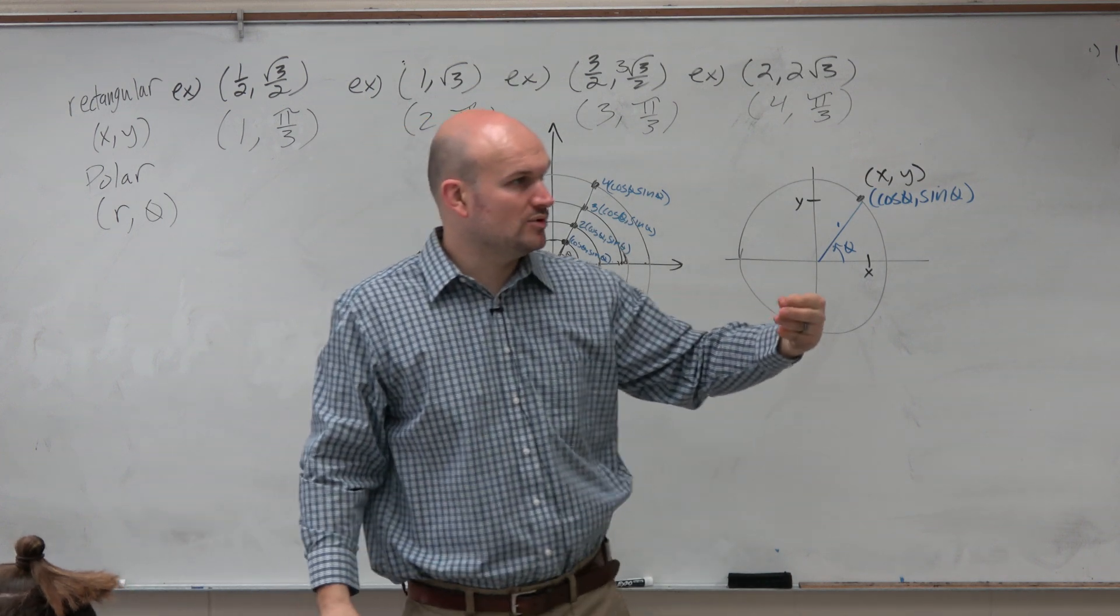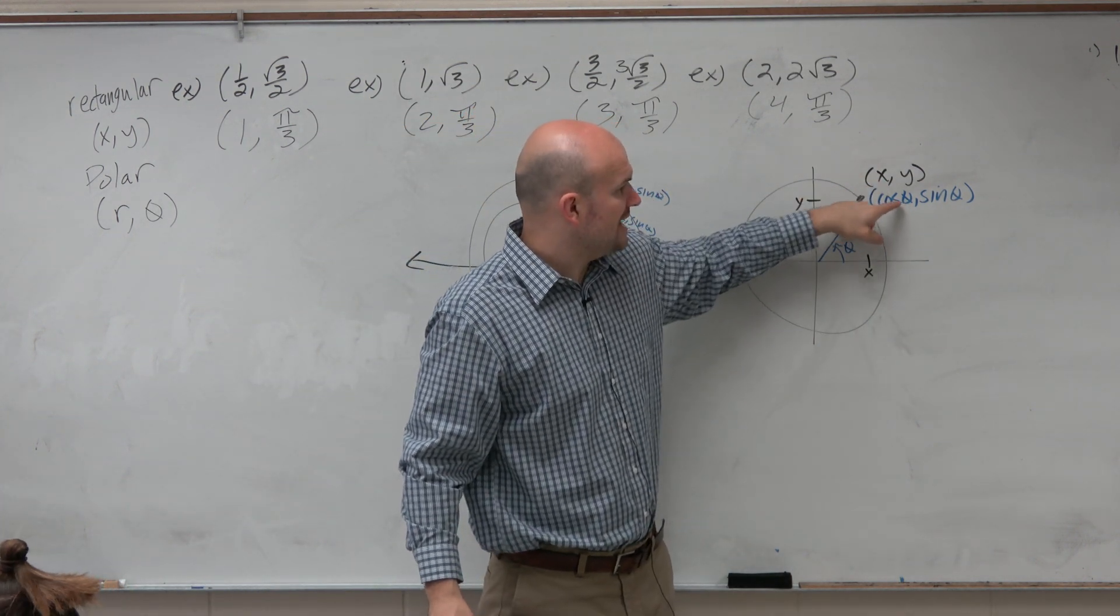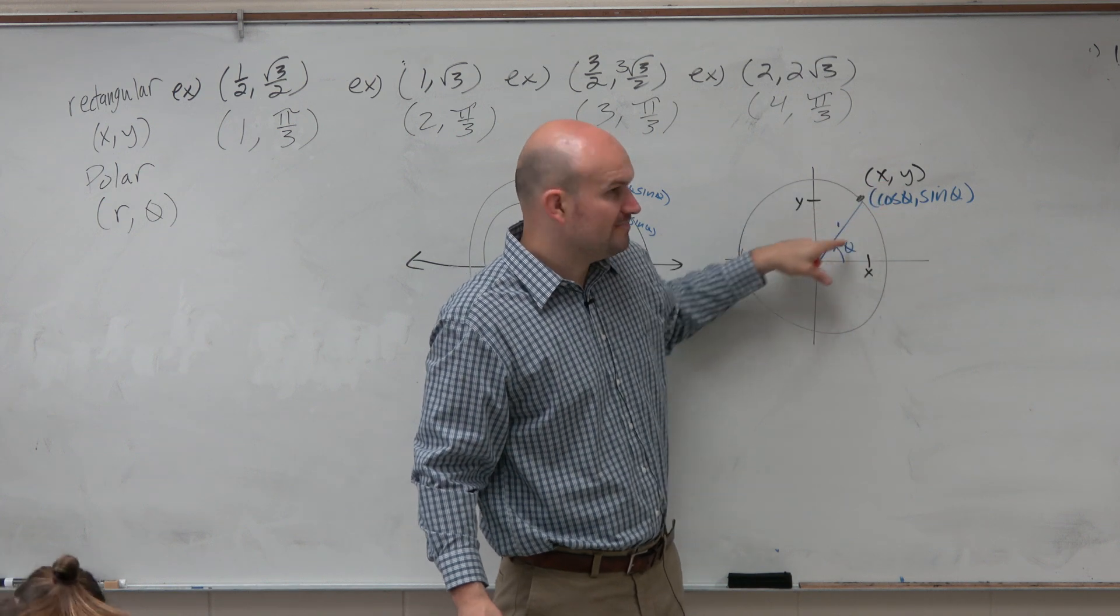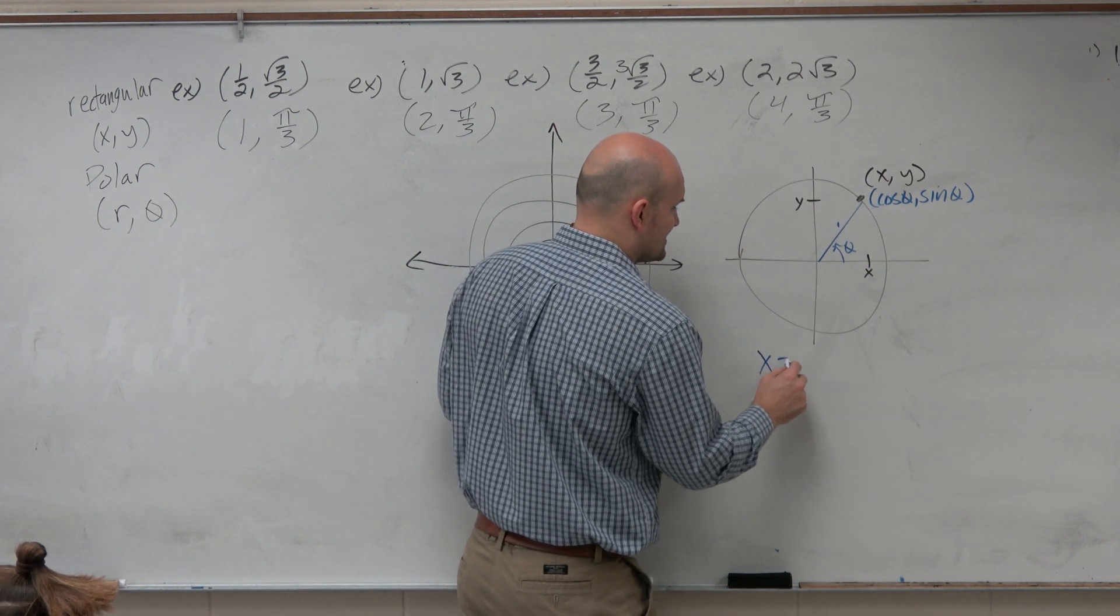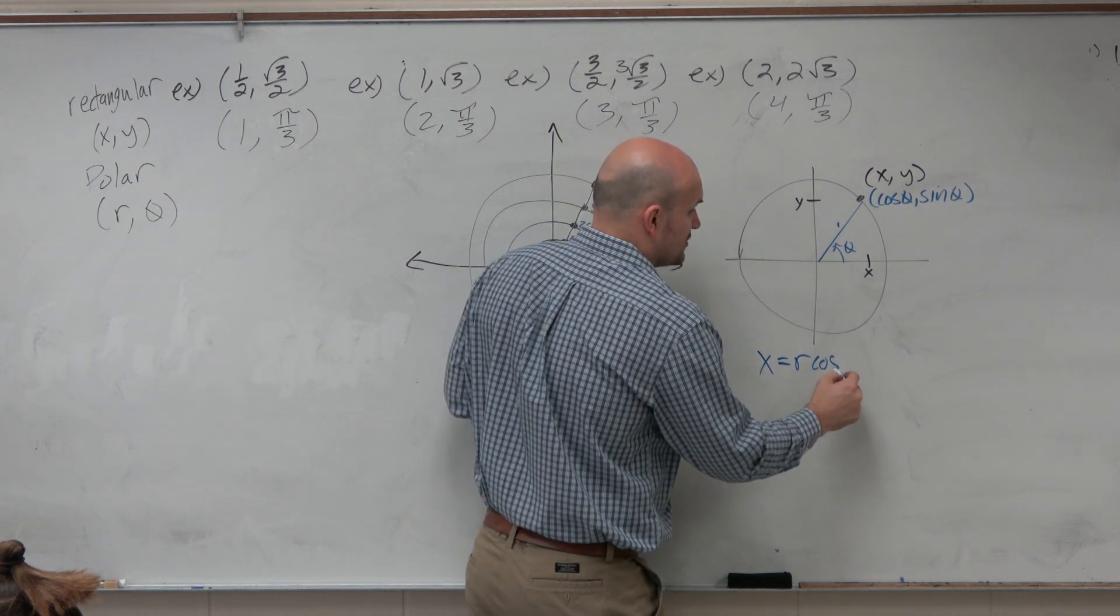So therefore, to represent any of these points in terms of x and y based on theta, we can say x equals whatever your radius is multiplied by cosine of theta.